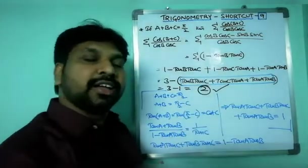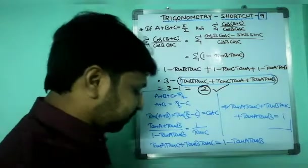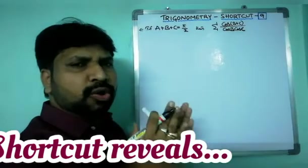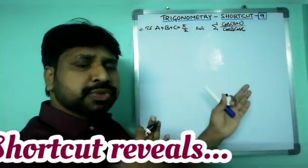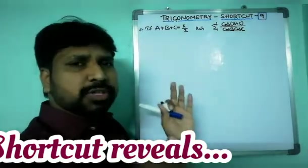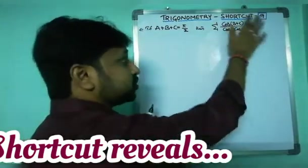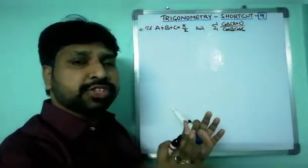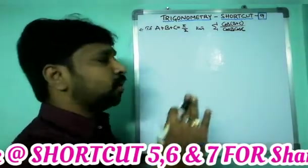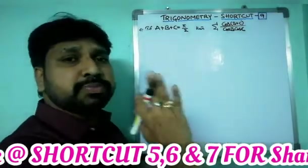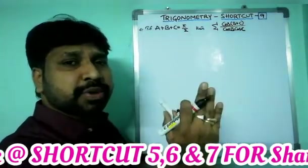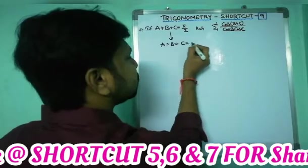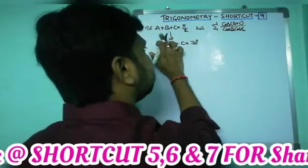Now I want to discuss the shortcut. This kind of question is very easy using the shortcut method. The shortcut was introduced in previous sessions — it's the same shortcut, but the form of the question is completely different. For a plus b plus c = 90 degrees, we use the sharing: a = b = c = 30 degrees, since 30 + 30 + 30 = 90 degrees.